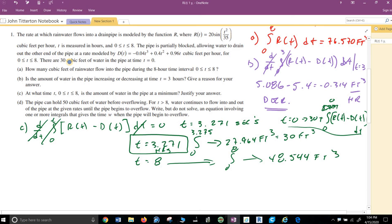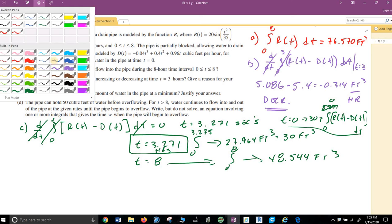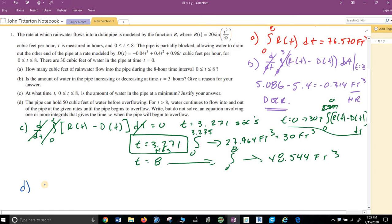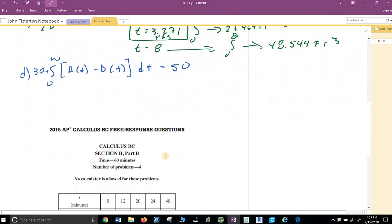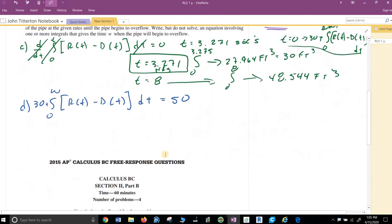Last, but very much not least. The pipe can hold 50 cubic feet of water before overflowing. For T greater than 8, water can just flow in out of the pipe. It's given right until the pipe begins to overflow. Right but not self-equation. Write an equation involving an integral that can be solved to find W, the time at which the pipe begins to overflow. So, the integral, 30 plus the integral, 0 to W, R of T minus D of T, DT equals 50. See, that's it. Solve it. That's what they want you to say. Hey, go solve it, not to actually solve it. So, that is tricky stuff.